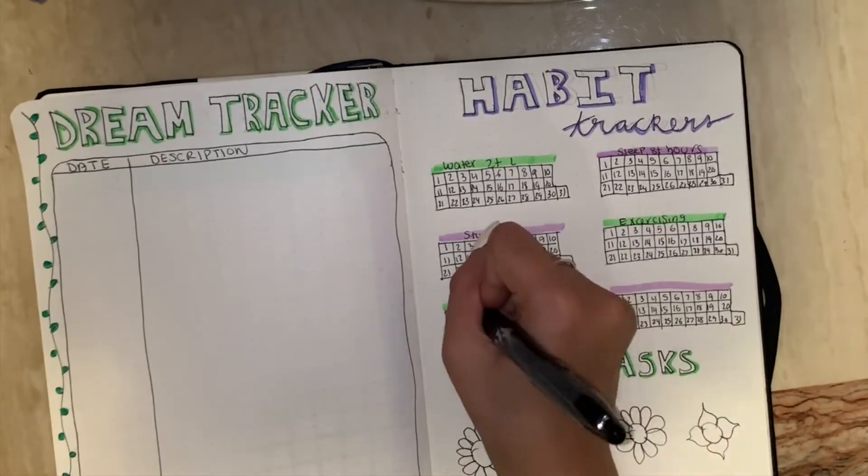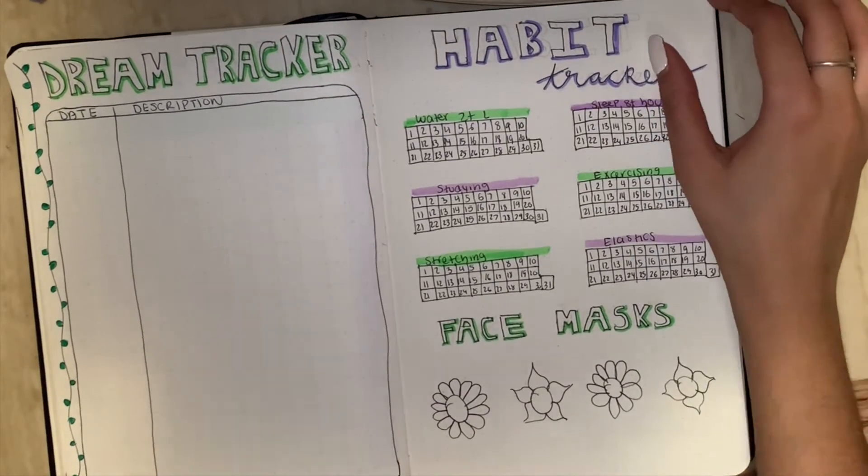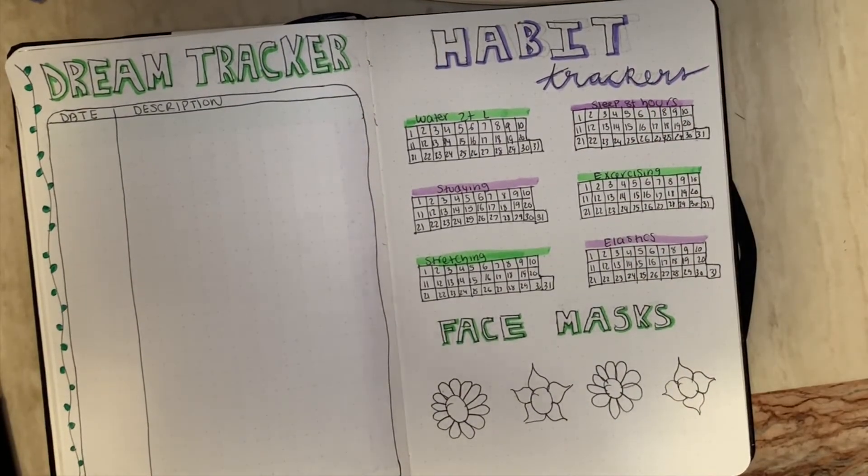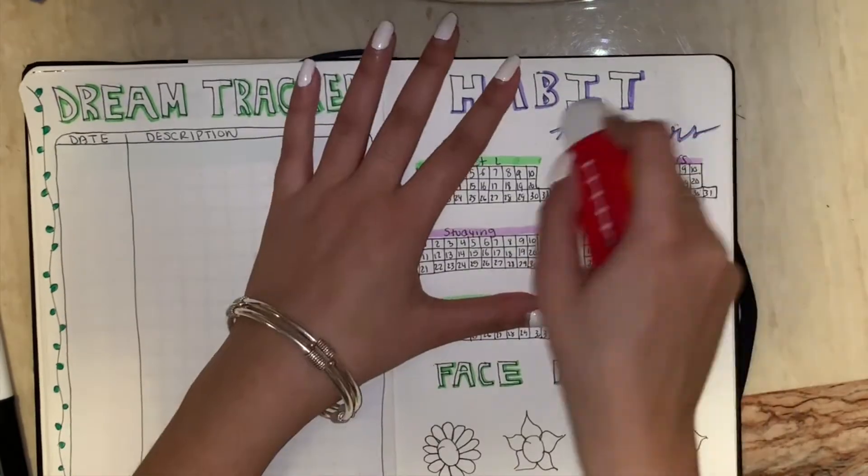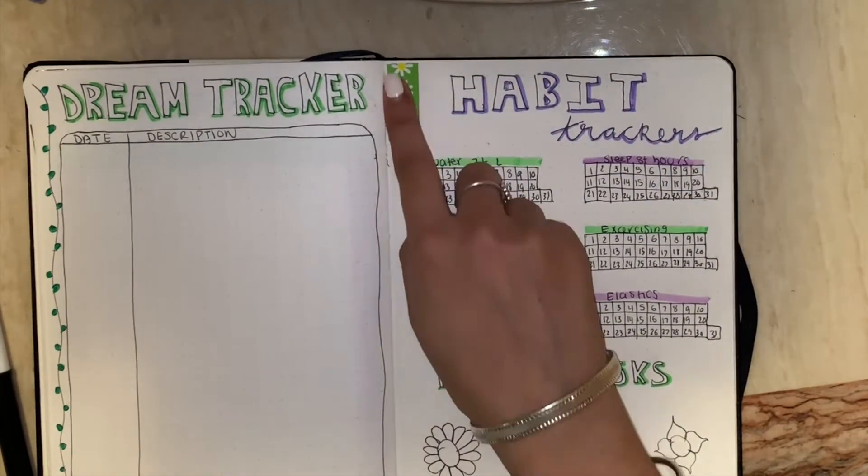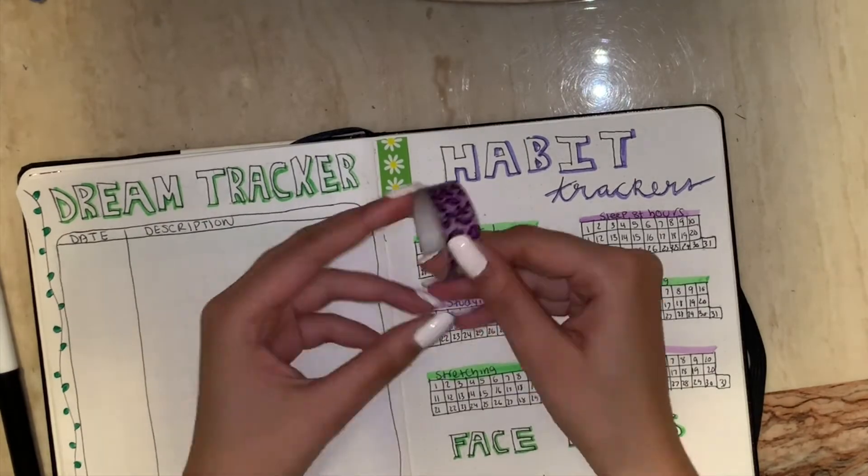I'm just writing what each tracker is. So I'm tracking how much water I drink, my sleep, my studying, my exercising, my stretching, and my elastics for my braces. Now I'm just adding washi tape.